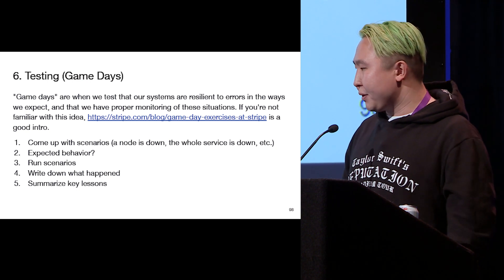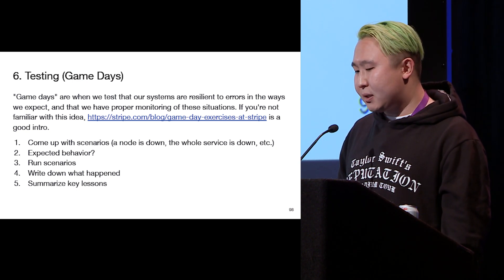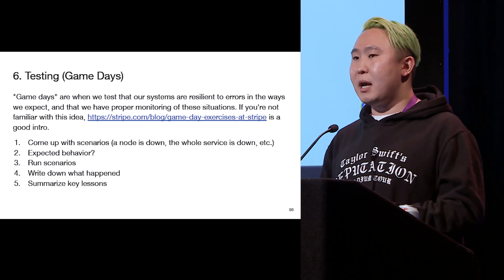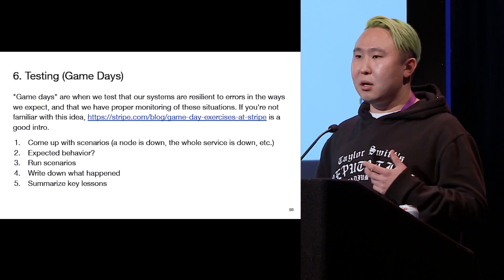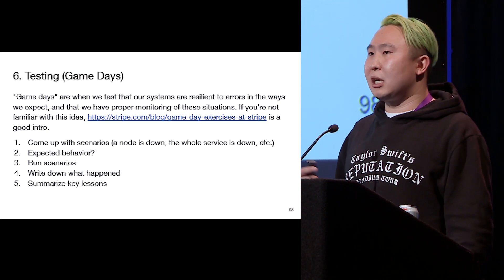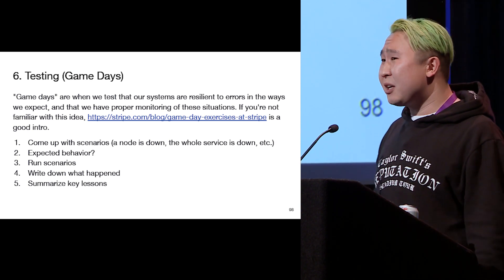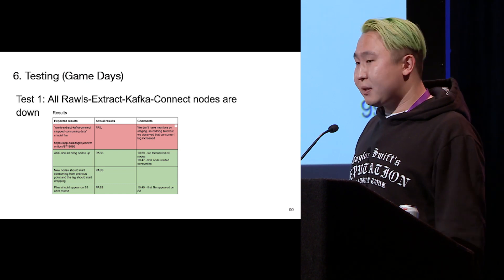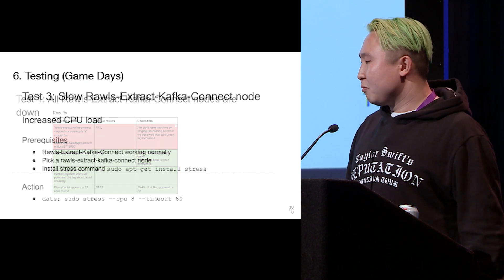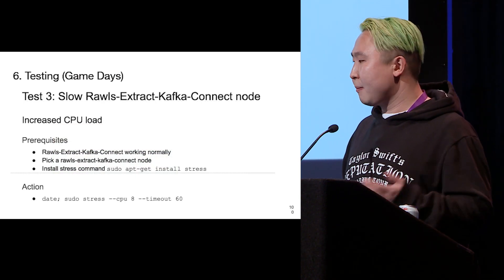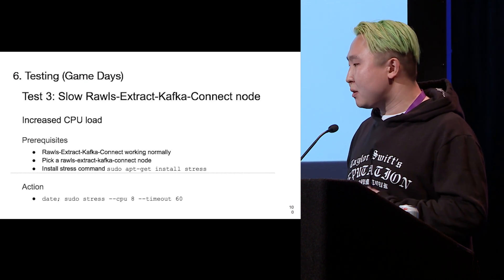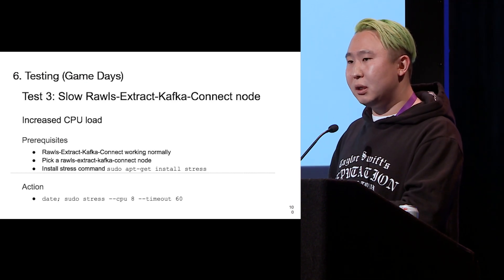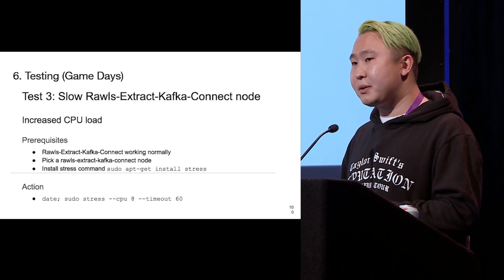Game days, for those not familiar, are created to test how resilient your system is, what the limits and fault tolerance are. You come up with scenarios — you kill a node, you kill the whole service, you make a node slow — different scenarios. You list expected results, run the scenarios, write down what happened, and then summarize key lessons. For example, we were killing all nodes, expecting certain things to happen — some did, some didn't. We were also artificially slowing down a node. Out of this, it allowed us to figure out what monitoring we needed for certain parts, whether to invest in new tooling, and it also allowed other people to get familiar with the system without affecting production.